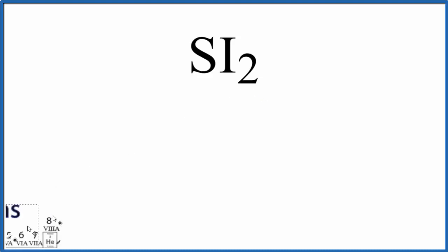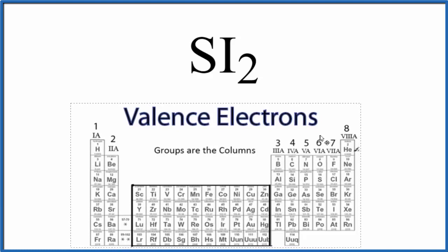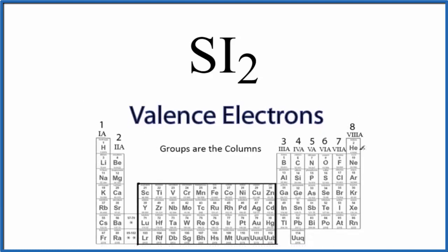Let's first count the valence electrons before we write the Lewis structure. If we find sulfur on the periodic table, we can see that these numbers here are telling us the number of valence electrons for the group.